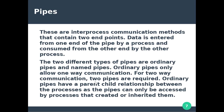The last method is pipes. In inter-process communication using pipes, there are two endpoints. Data is entered from one end of the pipe by a process and consumed from the other end by another process. Ordinary pipes allow only one-way communication.